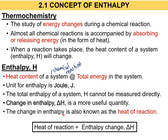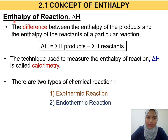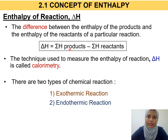The change in enthalpy is also known as the heat of reaction. So that means if you want to know the heat of a reaction, it is the same as the enthalpy change, delta H. We can measure it by finding the difference between the total enthalpy of products minus the total enthalpy of reactants. There is actually a method to measure the enthalpy of reaction, which is called calorimetry.